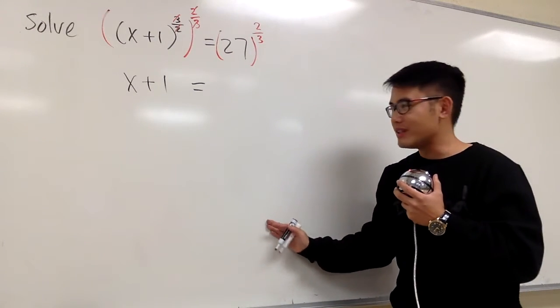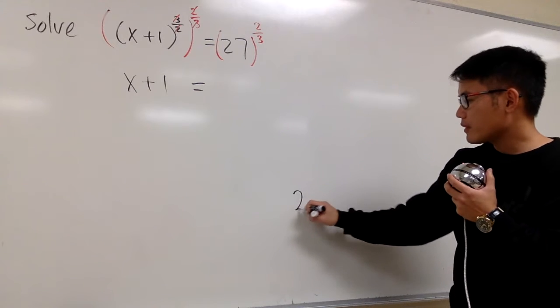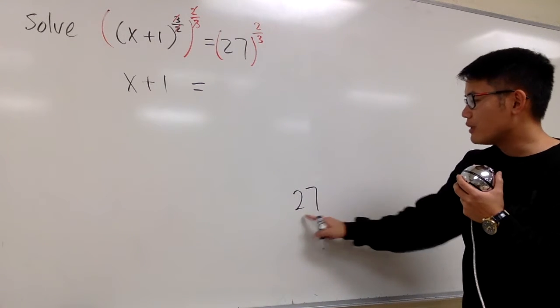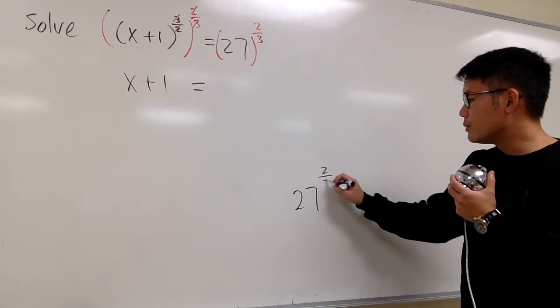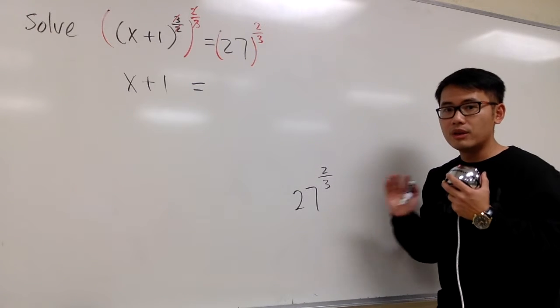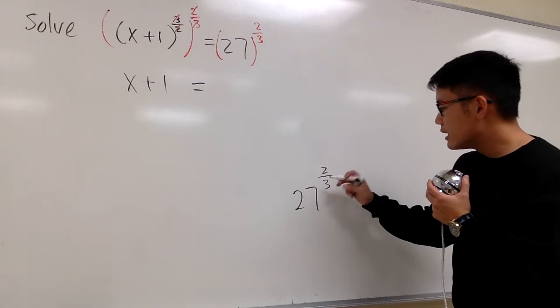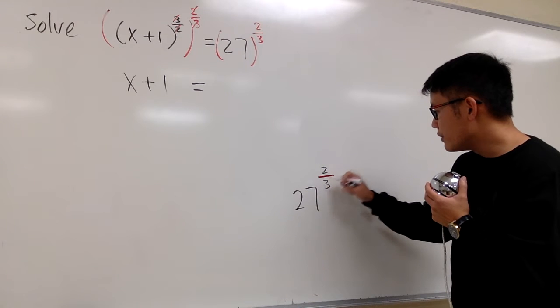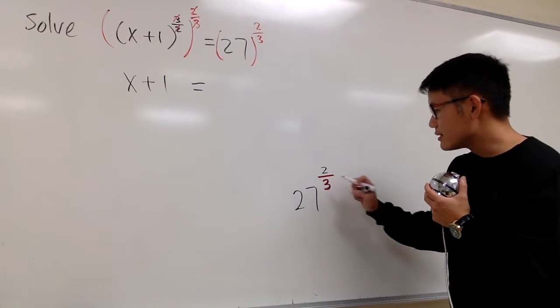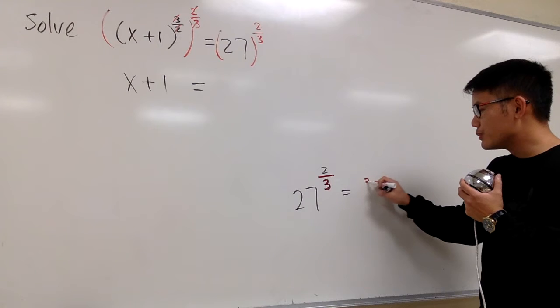And let me work it out right here for you guys. We can also use a calculator if you would like, but when we have 27 raised to the 2 over 3 power, fraction power, what we do first is look at the denominator of the power right here, because this is going to change to the cube root, right?